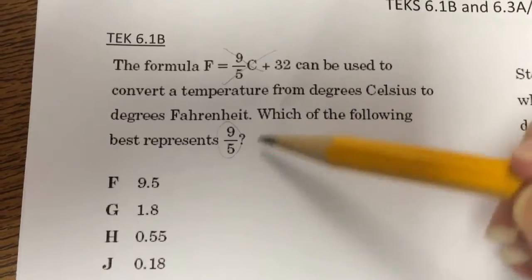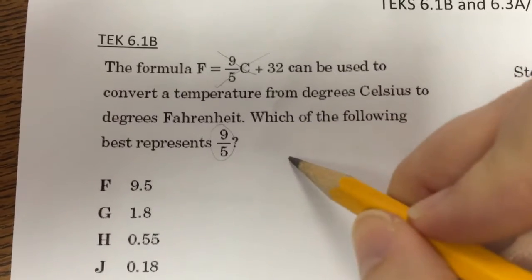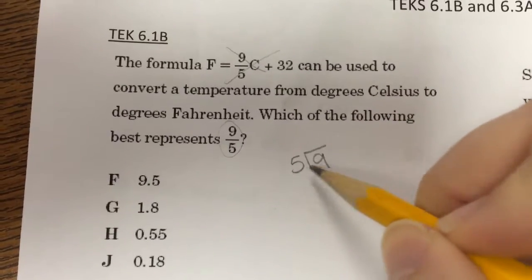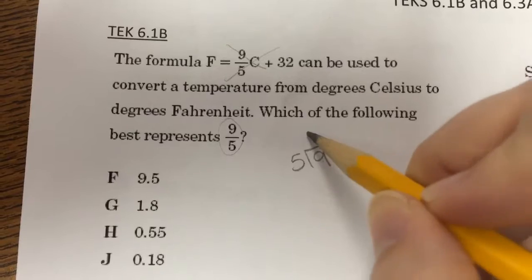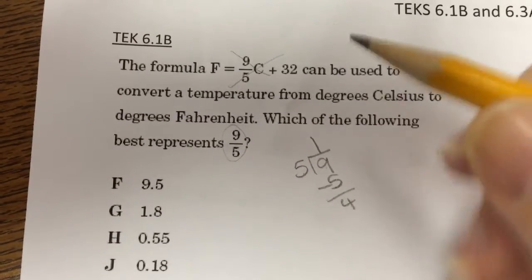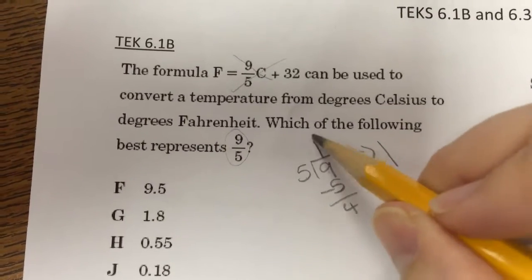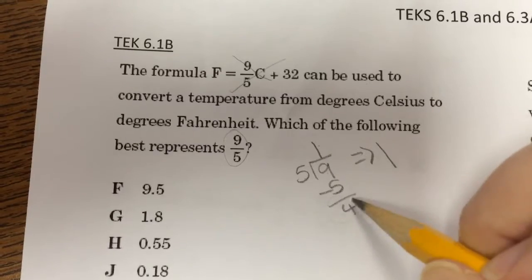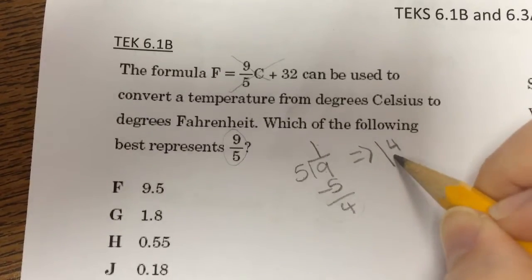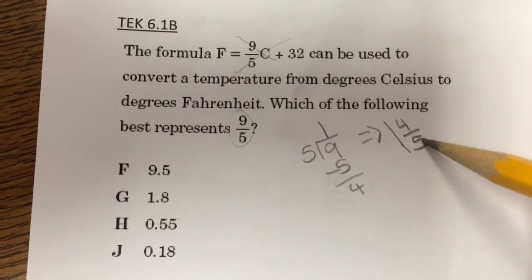I'm going to start by changing this improper fraction into a mixed number. So how many times can 5 go into 9? 5 can go into 9 one time, 1 times 5 is 5, with a remainder of 4. So that means my new number is one whole, my answer is my whole number, my remainder is my new numerator, and my denominator stays the same. So 1 and 4 fifths.